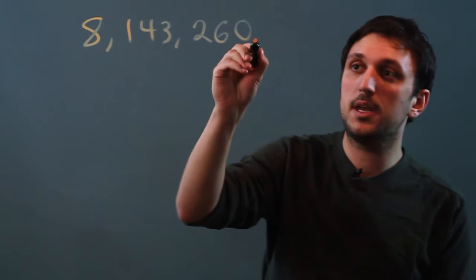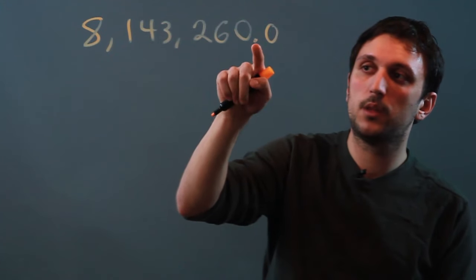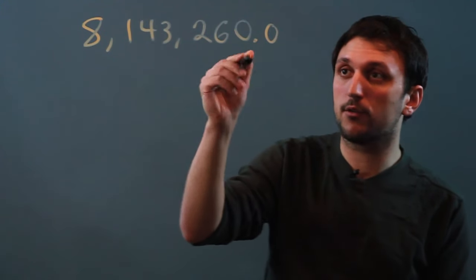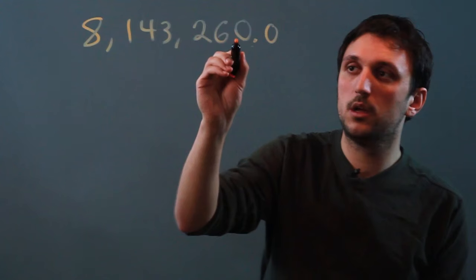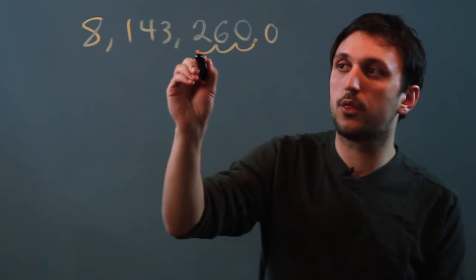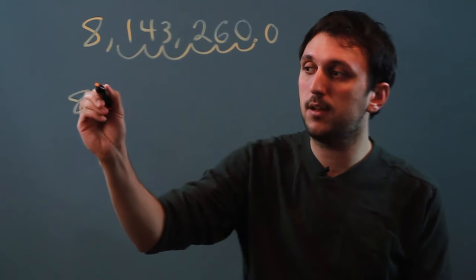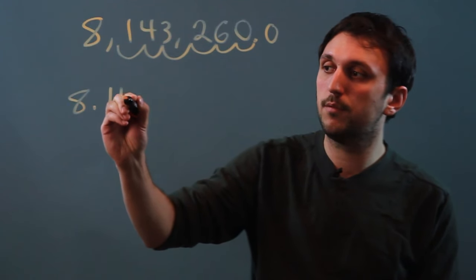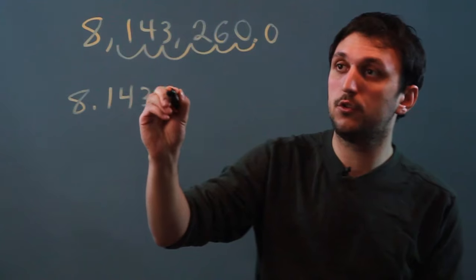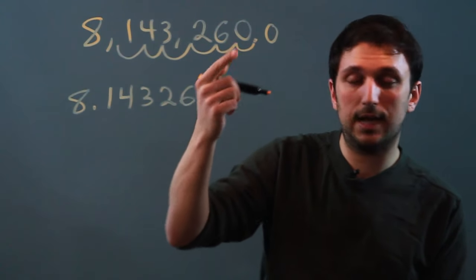So in this case, right now the decimal is over here, and we want it to be over here. So we have to move it over 1, 2, 3, 4, 5, 6 places. So we have 8.14326, and you don't have to say the zero,